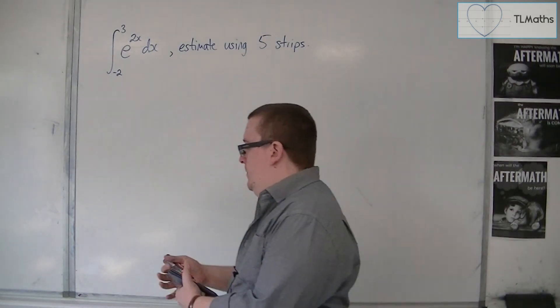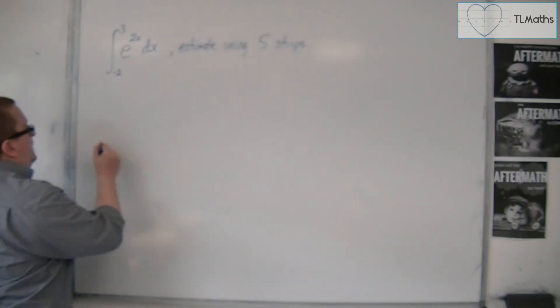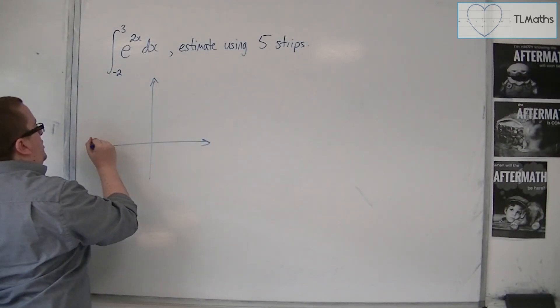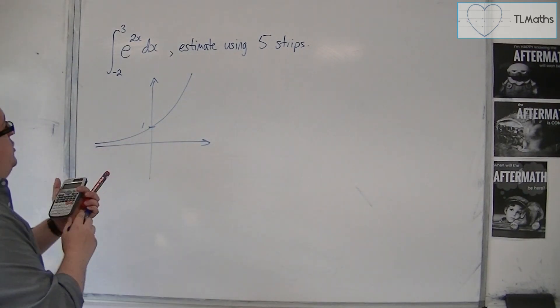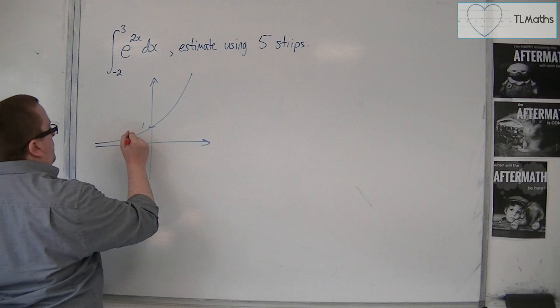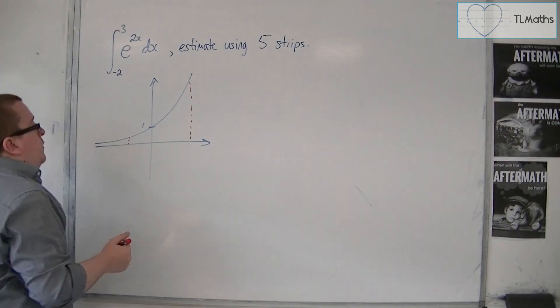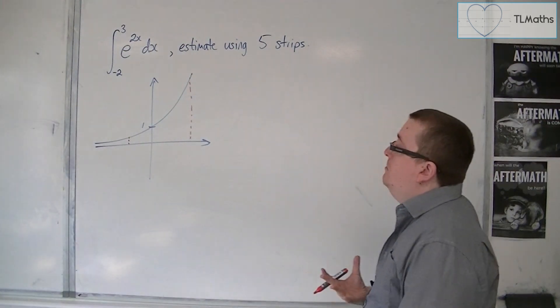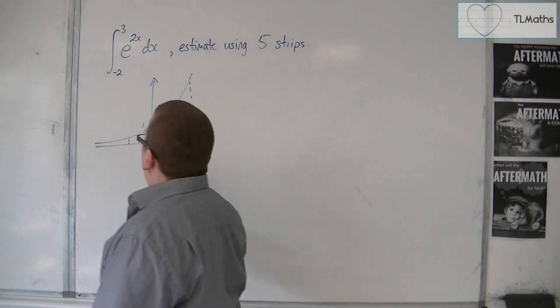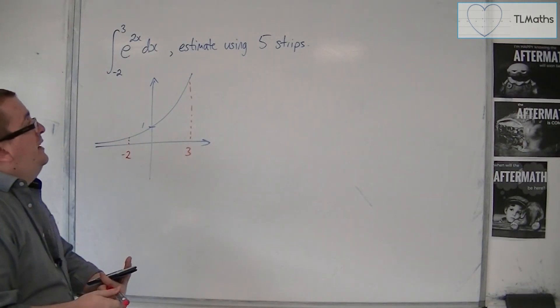Very briefly, we're going to think about what e to the 2x looks like. We should know what it looks like. So e to the 2x will look something like this, going through 1. And we are integrating this between minus 2 and 3. We know that we could work out the exact area between minus 2 and 3, but we're going to find an estimate using the trapezium rule.